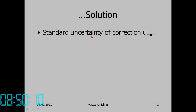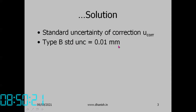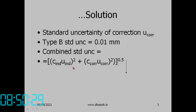The standard uncertainty of the correction is given directly. The calibration certificate gives the Type B standard uncertainty as 0.01 mm, with infinite degrees of freedom. The combined standard uncertainty is the square root of the sum of squares: sensitivity due to indicated readings times standard uncertainty of indicated readings, squared, plus sensitivity in correction times standard uncertainty of correction, squared.